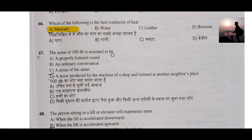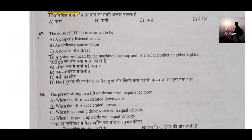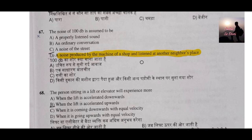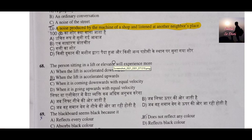Question number 67: The noise of 100 decibels is assumed to be what? The correct answer is option D — a noise produced by a machine shop heard at a neighboring residential area. A jet engine at an airport produces noise up to 125 decibels. Also remember: the human hearing capacity ranges from 20 hertz to 20 kilohertz.